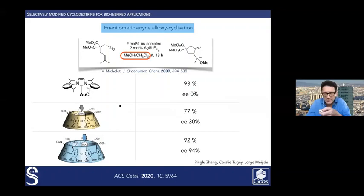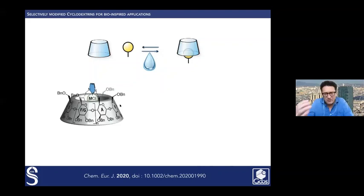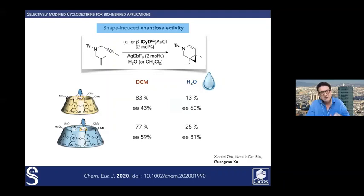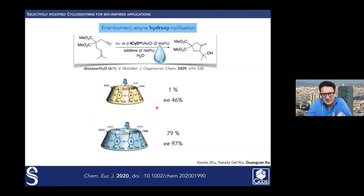We could increase enantioselectivity in another reaction called an alkoxycyclization reaction, also catalyzed by gold. It went up to 94%. Of course, when you speak about cyclodextrin, everybody asks you, did you do the reaction in water? But you can see that our compound is not soluble in water. Every reaction is done in organic solvent because of benzyl protection. So to make them soluble in water, what we had to do was to convert the benzyl groups into methyl groups, and then they are very soluble in water. We did the same reactions as before. When you do the reaction in chloroform, you've got good yields, but relatively low enantioselectivity. And in water, you've got bad yields, but better enantioselectivity.